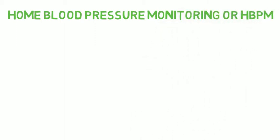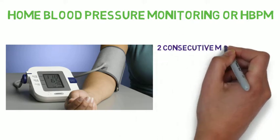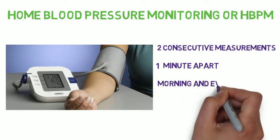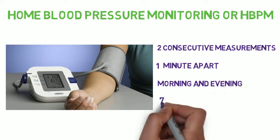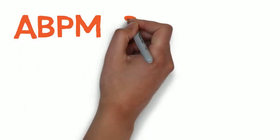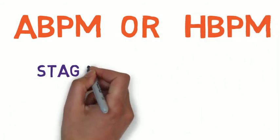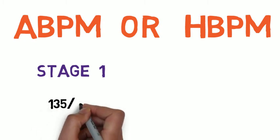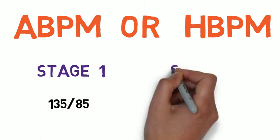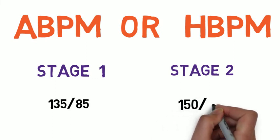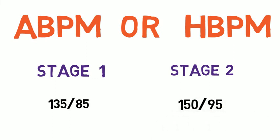This consists of two consecutive measurements, at least one minute apart, repeated twice daily, usually in the morning and the evening, over a period of seven days. When the average reading for ABPM or HBPM is taken, the threshold limit for stage 1 hypertension is lowered to 135 over 85, and for stage 2 hypertension it is reduced to 150 over 95.